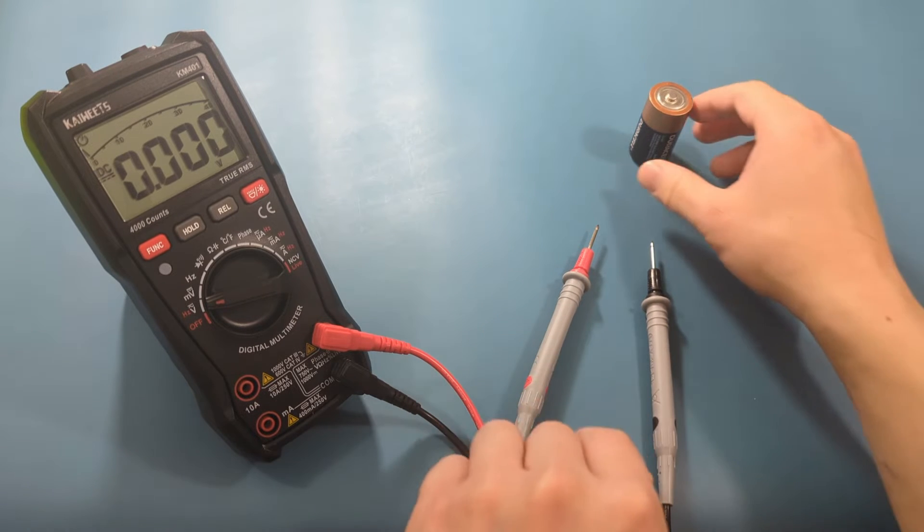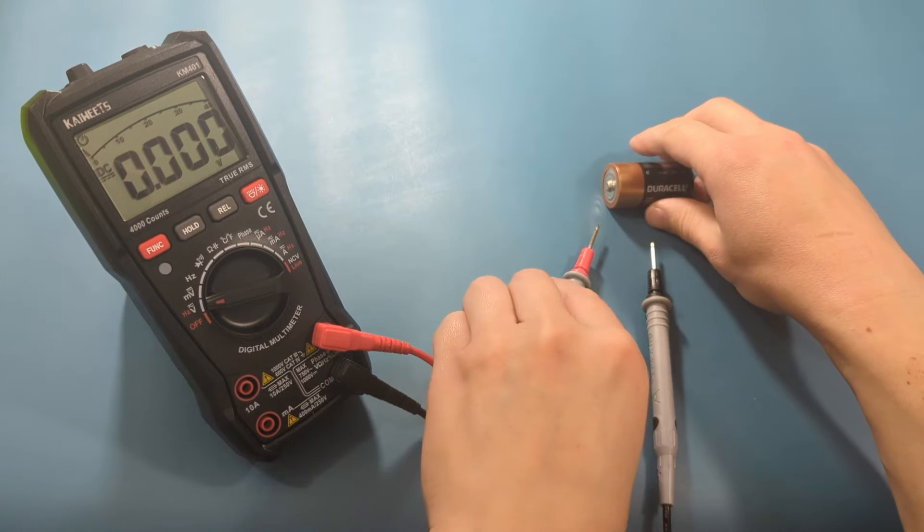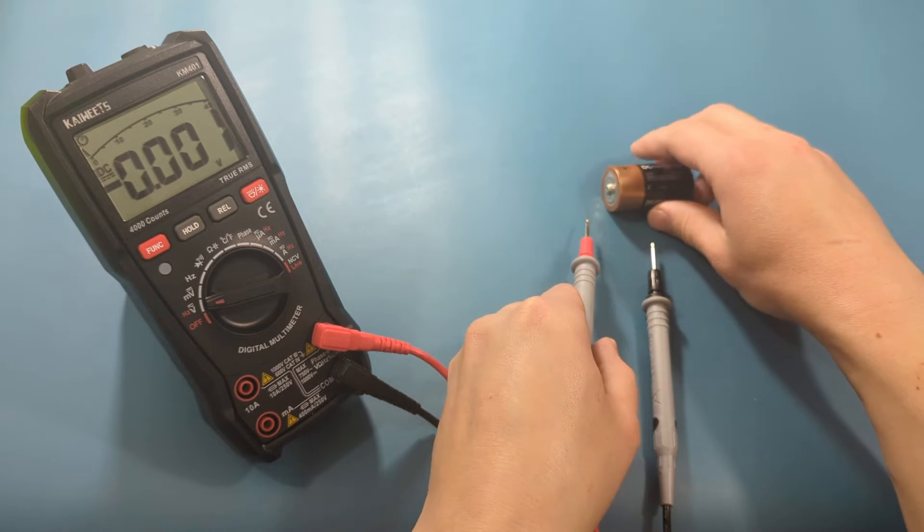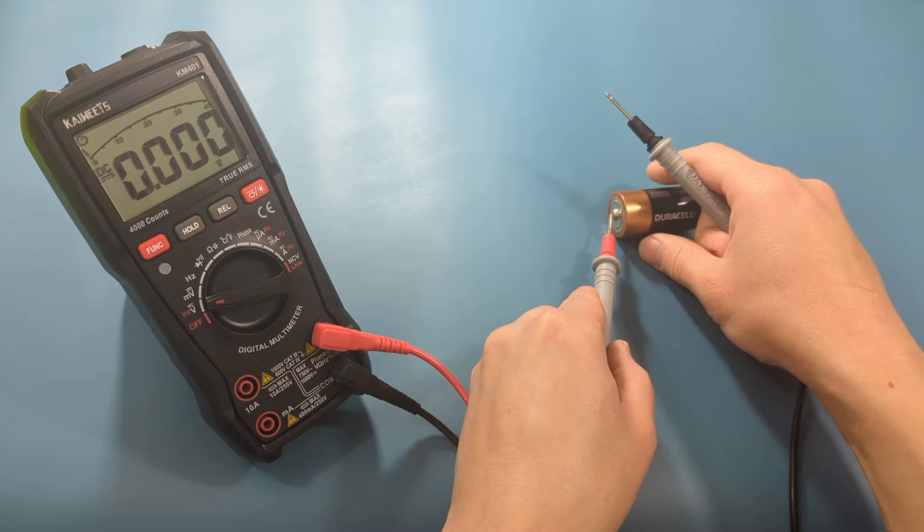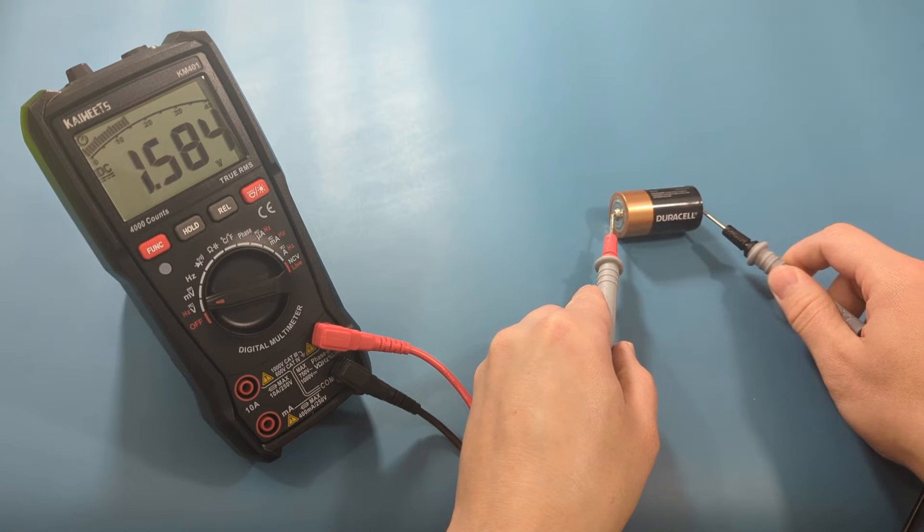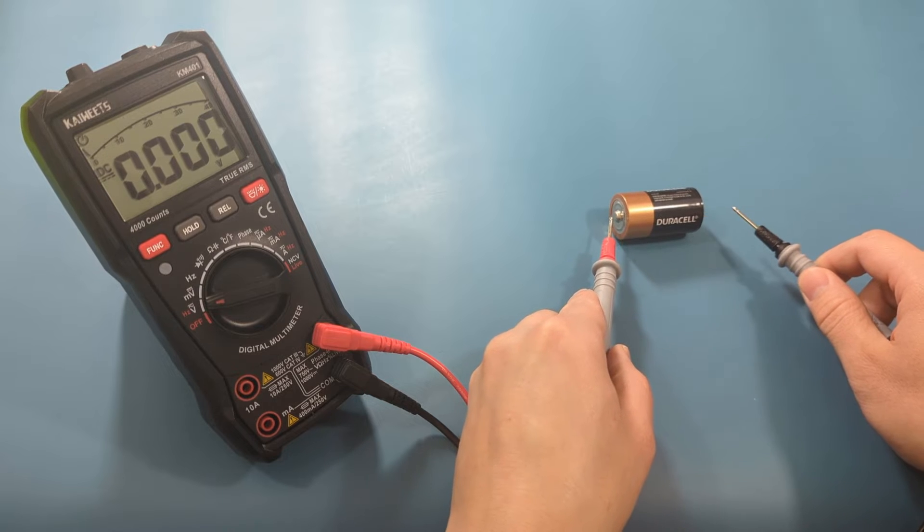The flat side of the C battery with a small button on top is the positive end. For voltage testing, place the red probe lead on the battery's positive terminal and the black probe lead on its negative terminal.